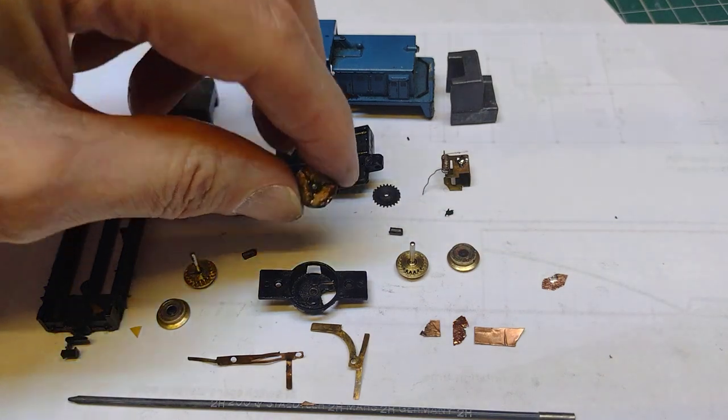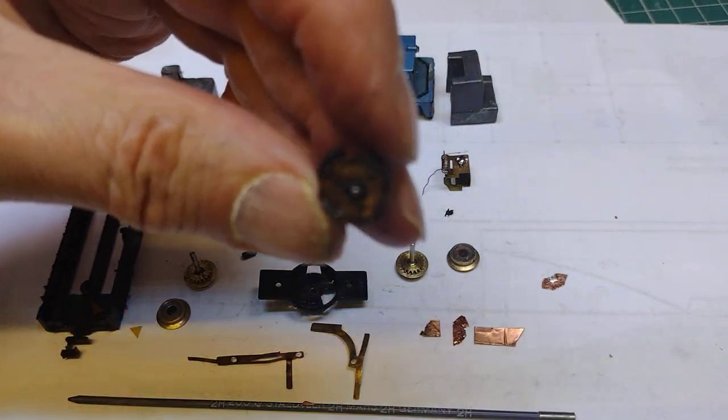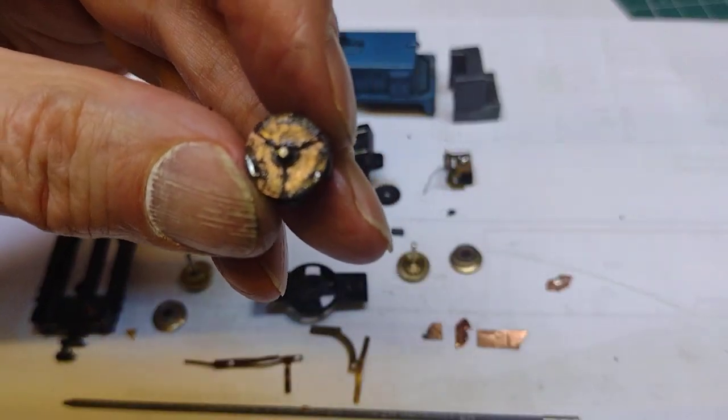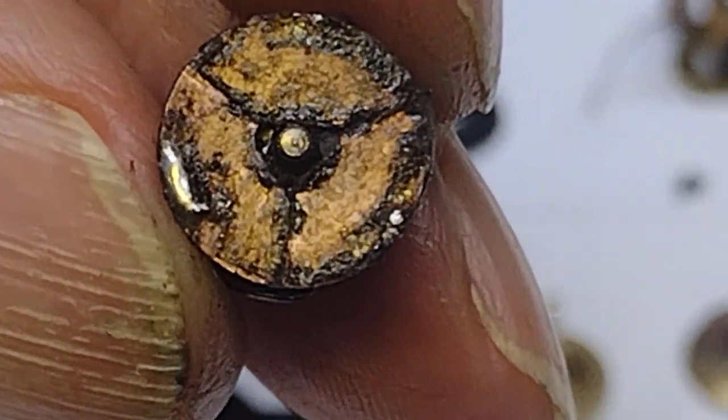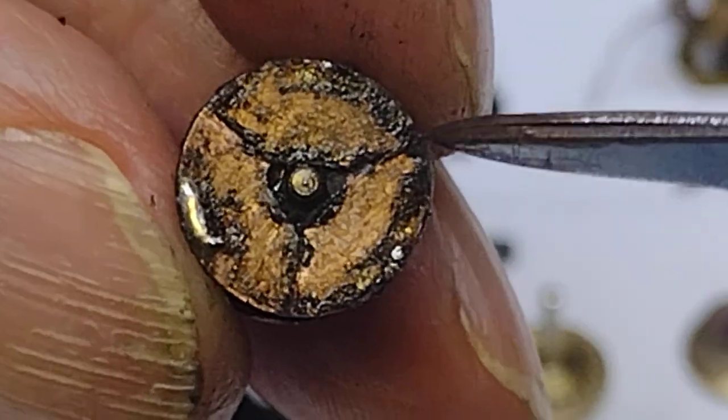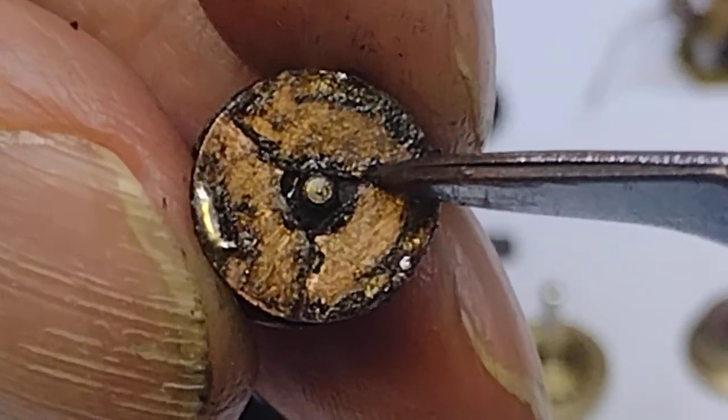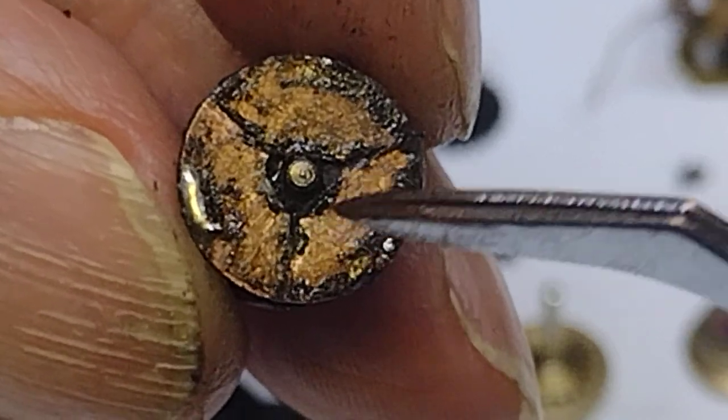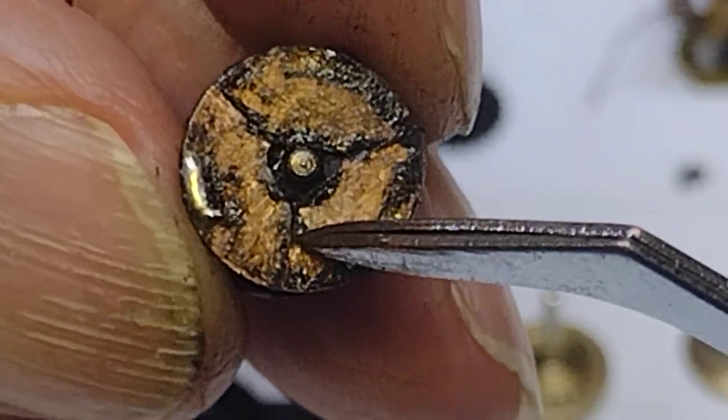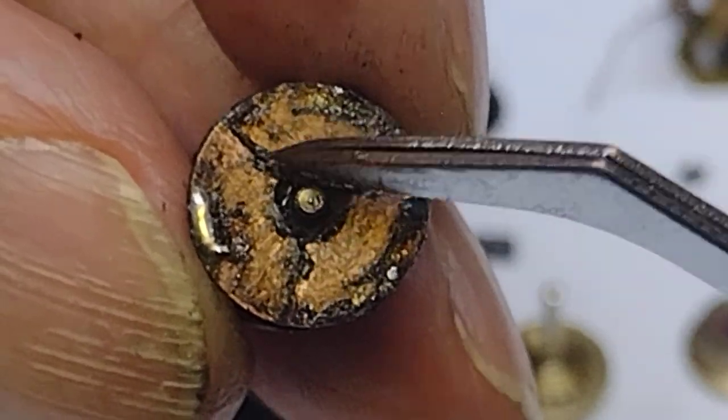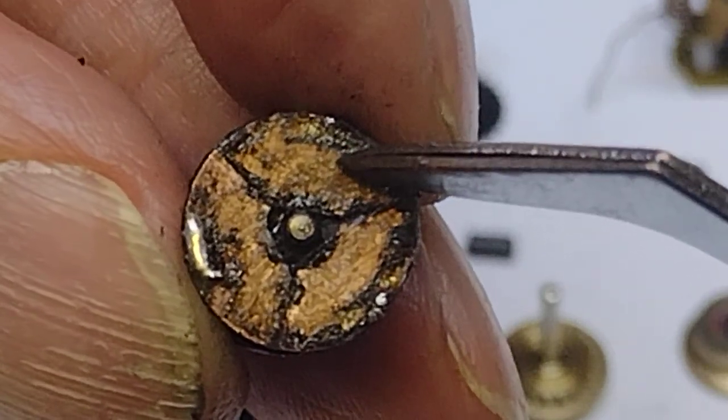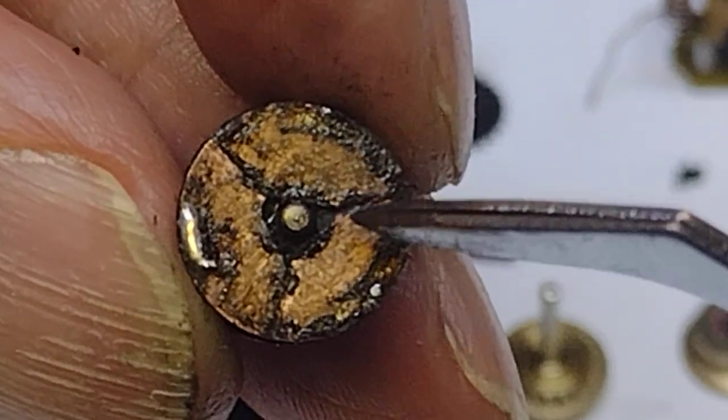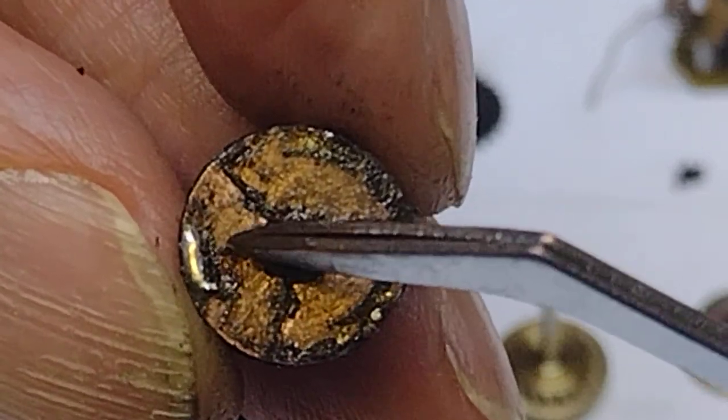This is the commutator part. If we come in on this, hopefully we can see that around where the brushes go here, here and here, the copper is moved away and broken away so that the brush didn't contact both sides at the same time.